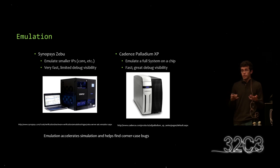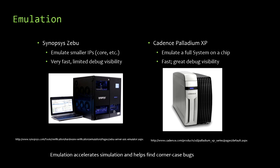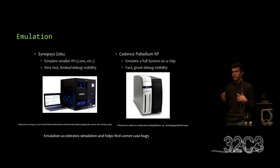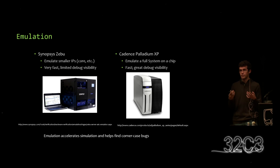There is a way to throw more hardware and money at this problem — something called emulation. Two major design tool companies, Cadence and Synopsys, make emulation machines. These are special FPGA-based hardware that allow you to load a design onto them and run testing at a faster rate. One of these boxes is going to set you back probably close to a million dollars, but they can run at around one to one and a half megahertz — still 2,000 to 3,000 times slower than real silicon, but a million times faster than simulation. So they're very useful, but costly as well.